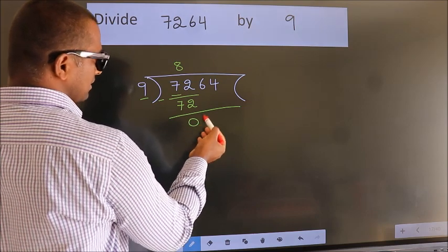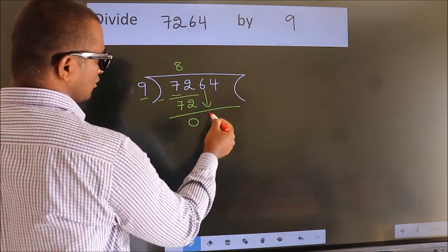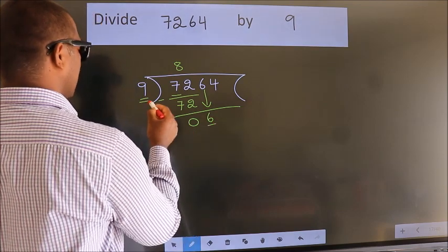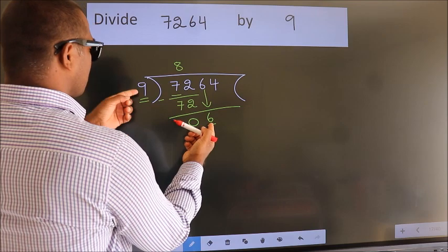After this bring down the beside number. So 6 down. Here we have 6, here 9. 6 is smaller than 9.